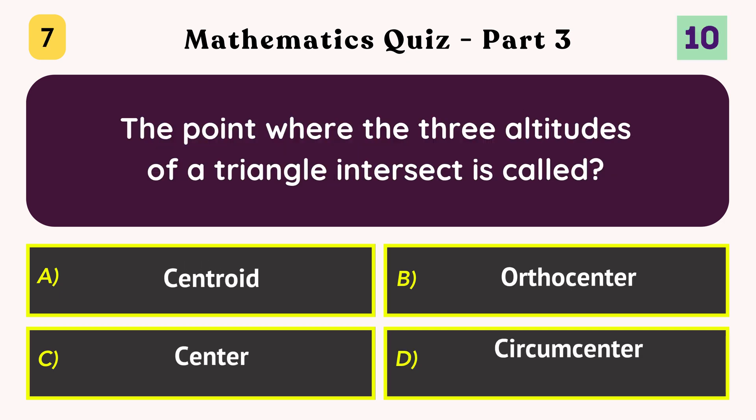The point where the three altitudes of a triangle intersect is called the orthocenter.